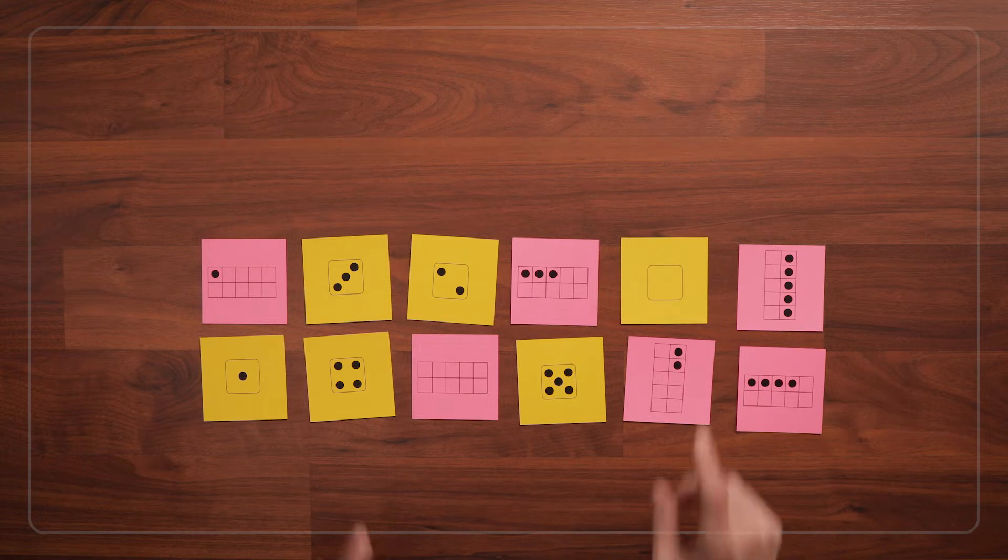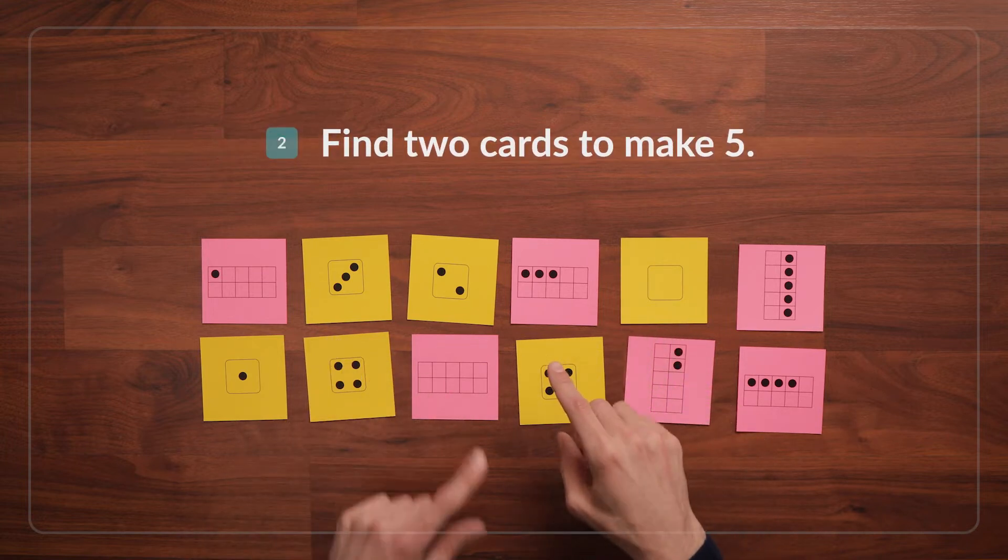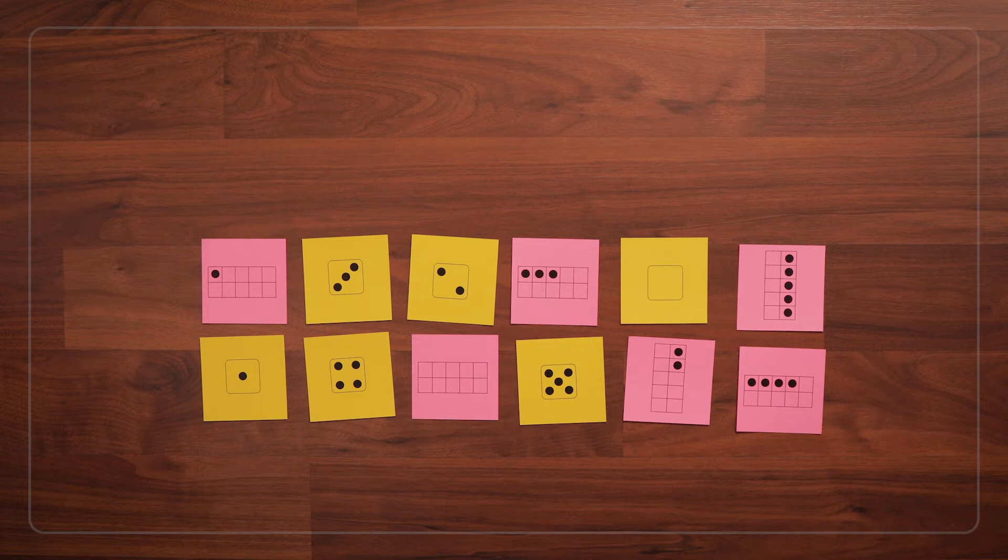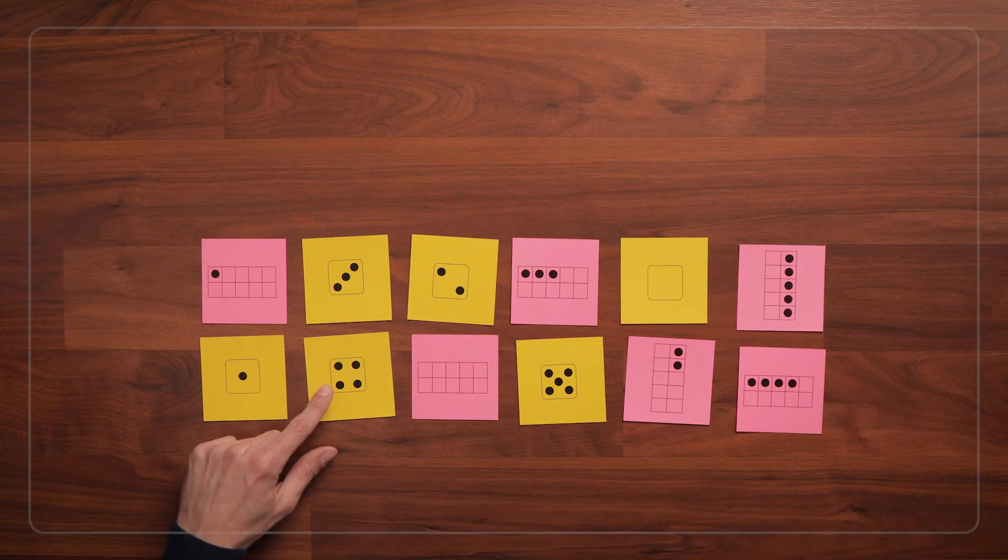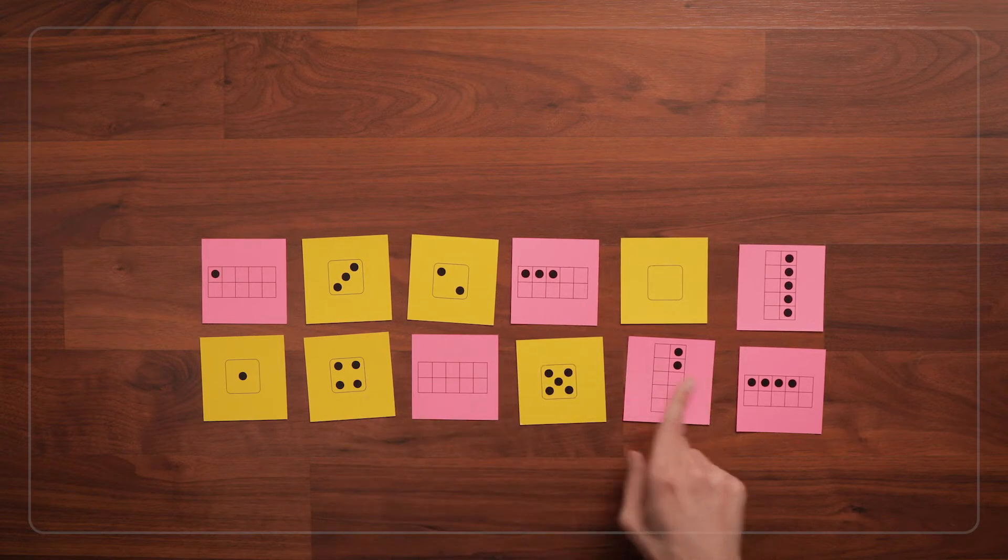You can say, I'm going to find two cards that add up to 5. We want to help children think about how many more we need to get to 5. So you could say, this card has 4 dots. How many more do I need to make 5? Yes, I need one more. Can you help me find a card with one dot?